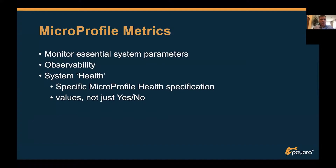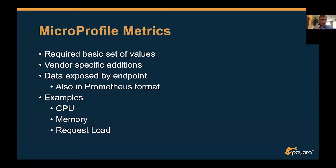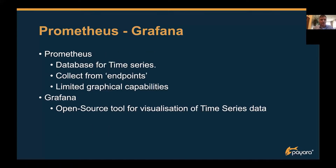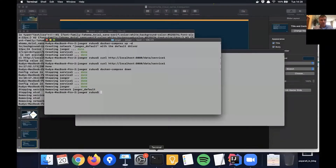The health specification can then be used to say my system is healthy, yes or no, depending on for example CPU being above 70% during one minute. MicroProfile Metrics has a required basic set of values, with vendor-specific additions allowed. By default it exposes values already in Prometheus format, which is a very popular format. You can also use that data in Grafana to make nicer-looking graphs.